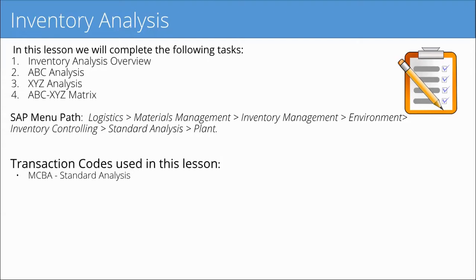The SAP menu path where most of these analysis tools are found is: Logistics > Materials Management > Inventory Management > Environment Folder > Inventory Control Folder > Standard Analysis > Plant. If you don't want to follow the SAP menu path, the transaction code MCBA for Standard Analysis will take you directly there.